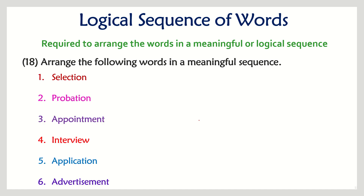Next question: selection, probation, appointment, interview, application, and advertisement — a sequence of hiring a candidate in a company. It starts with the company giving an advertisement. Then the person sends an application. Then an interview takes place, followed by the selection process. After selection comes the appointment, and finally the probation period.